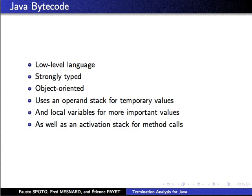Java bytecode is different from Java. It is the result of the compilation of Java. It is a low-level language, strongly typed, object-oriented. It has an operand stack for temporary values and local variables for more important values. It also uses an activation stack for recursion. This means that Java bytecode is more difficult to reason about than Java.